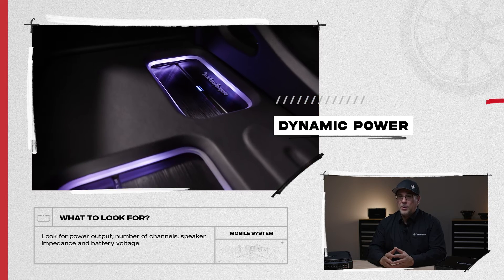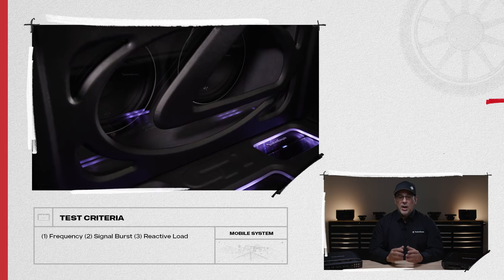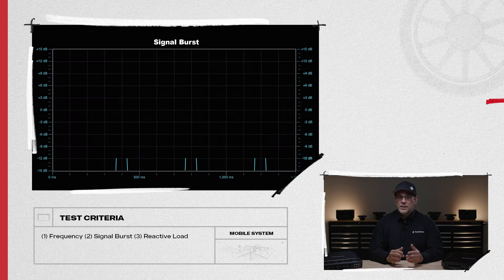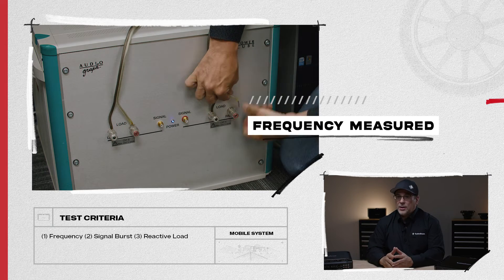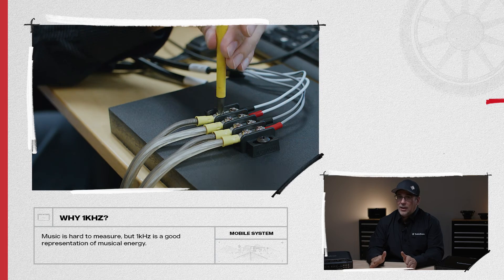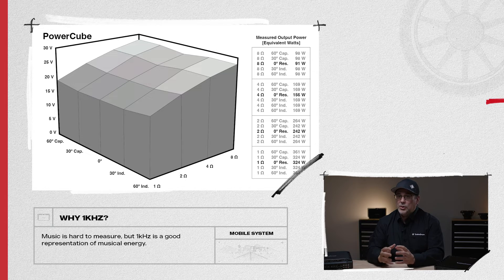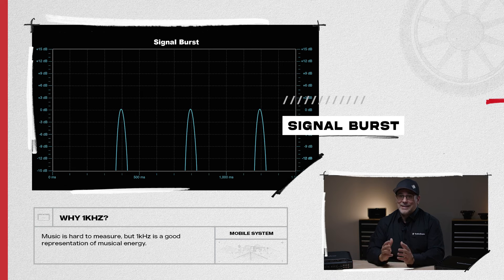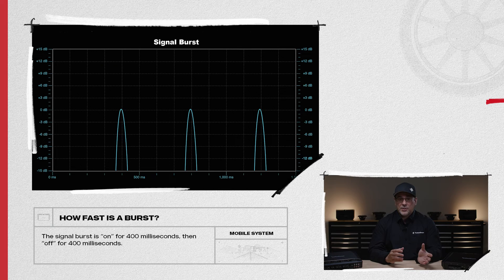Dynamic power is the real world power output that the amplifier produces in your car when playing music. Dynamic power uses three criteria: frequency, which is the tone we can hear that's generated; signal burst, which is the instantaneous pulse of the tone; and the reactive load, which is the speaker load while it's actively moving. The frequency used to measure dynamic power is 1 kHz. Audio engineers have chosen this as the baseline because traditional music is impossible to accurately replicate. The frequency of 1 kHz was chosen because it has the most amount of musical energy in a typical song. The next criteria is signal burst — music is dynamic and sound waves are complex, so they're constantly changing. To simulate this, a 1 kHz signal is used with 1% noise in burst mode, meaning the signal is turned on for a period and then turned off for a specified rest period.